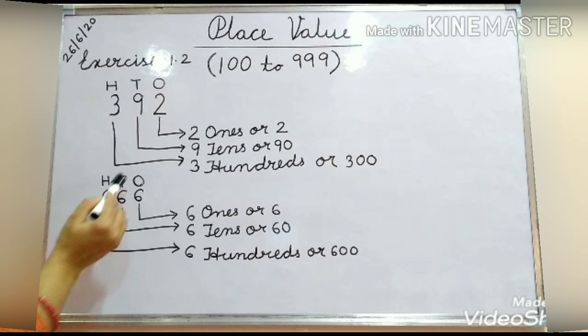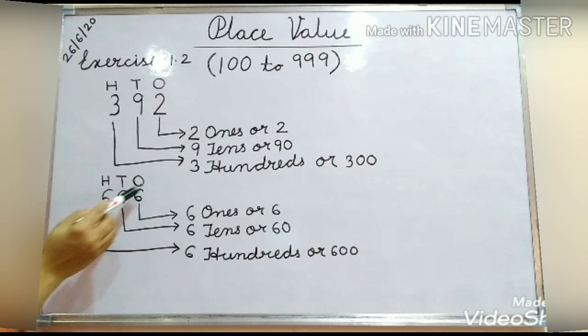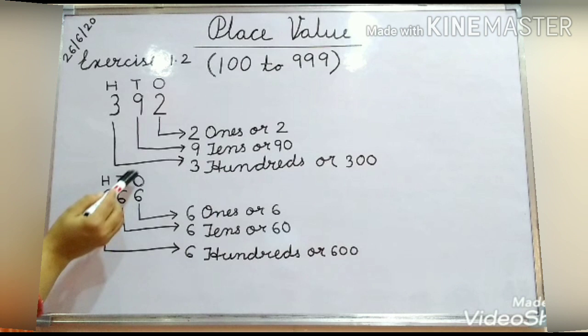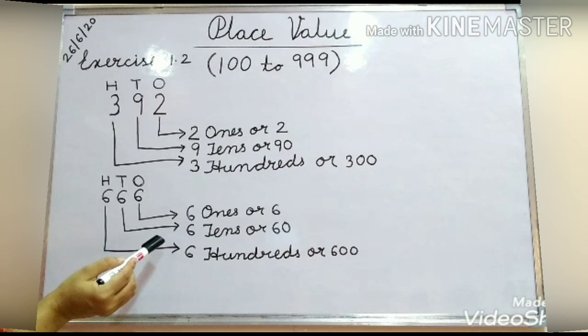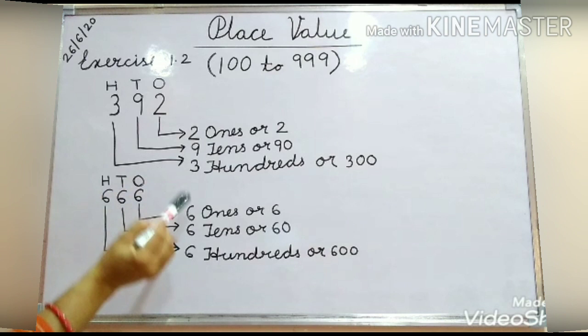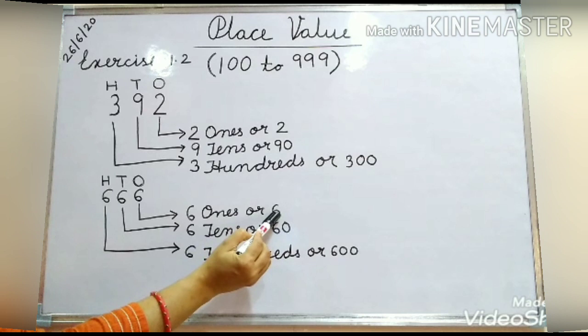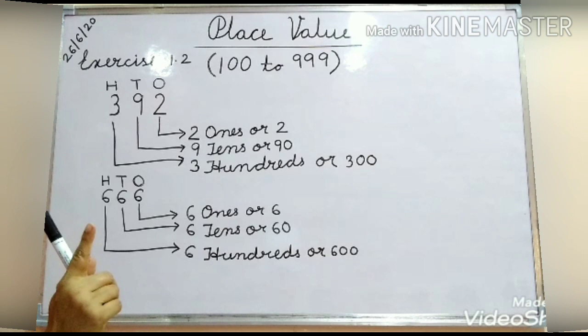Here you can see one more example: the number is 666. What you can see here? All the digits are the same — at every place, 6 is there: 1's place, 10's place, and 100's place. But the value will be different. Because this 6 is at 1's place, its value will be 6 ones. You can write here only 6, because at 1's place we write only 1 digit.